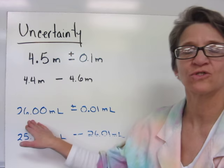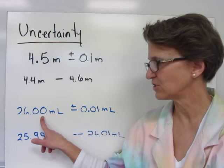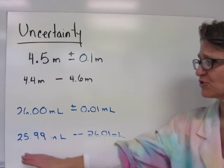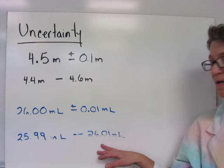Another measurement, this says 26.00 milliliters. This last place is the uncertain digit, and it's plus or minus 0.01 milliliters, which means your reading is 25.99 all the way up to 26.01 milliliters.